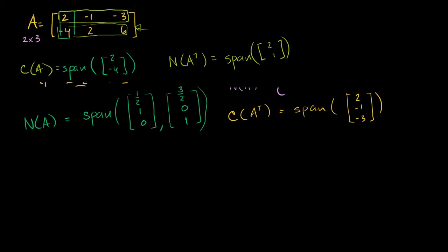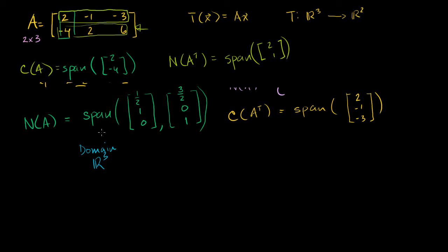If we imagine a transformation T(x) = Ax, our transformation is going to be a mapping from R3 — since x would be a member of R3, that's our domain — to R2, because we have two rows. You multiply a 2 by 3 matrix times a 3 by 1 vector and you get a 2 by 1 vector. So it's a mapping to R2, which is our co-domain.